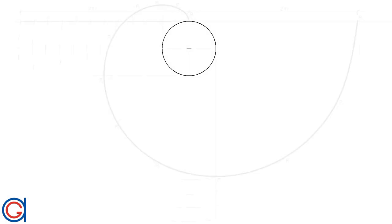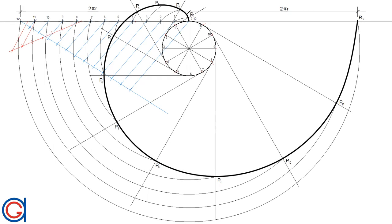Hello, today we are going to learn how to construct the involute curve of a given circle. The involute of a circle is the path traced out by a point on a straight line that rolls around the given circle.